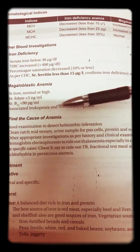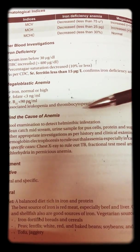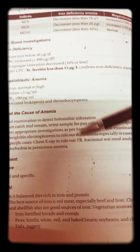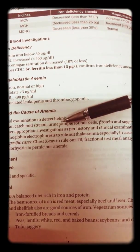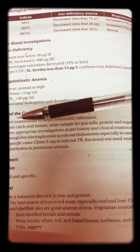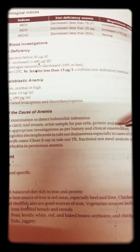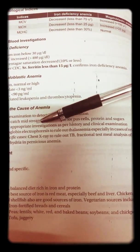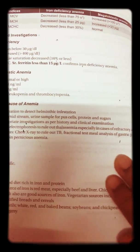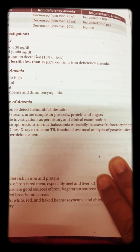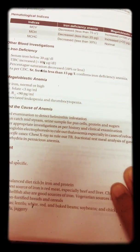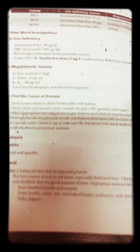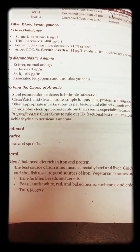To find other causes of anemia, stool examination and urine examination are done. Stool examination detects helminthic infection; clean catch urine for pus, proteins, and sugar. Other appropriate investigations are done as per history and clinical examination. Hematological electrophoresis is used to rule out thalassemias, especially in refractory cases. In specific cases, chest X-ray rules out TB, and fractional test meal analysis for gastric juice and achlorhydria in pernicious anemia.